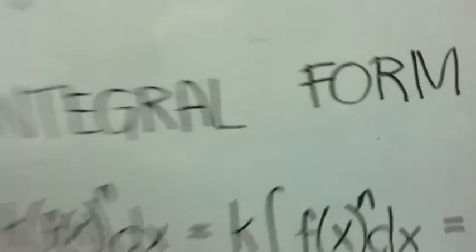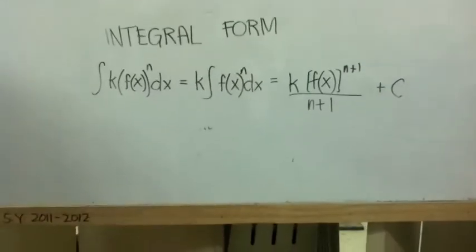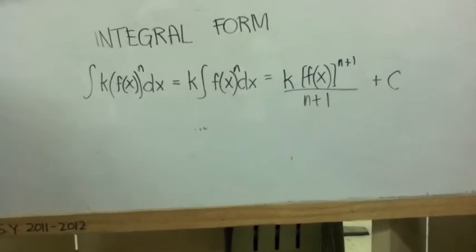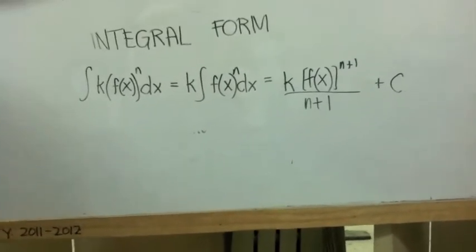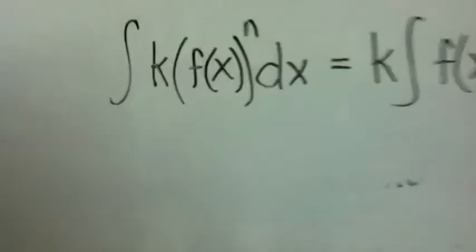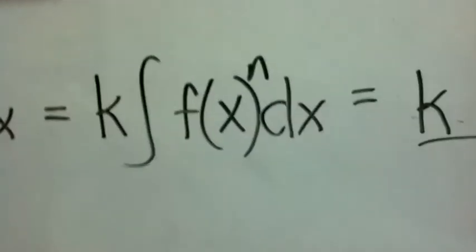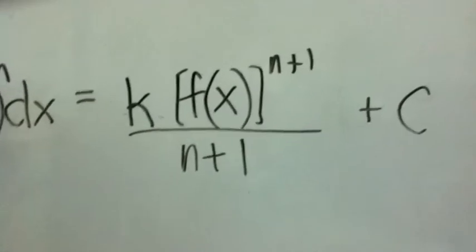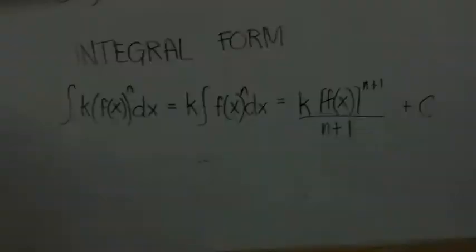In conclusion, during integration of polynomials, we always follow this form. For any function f of x, the integral of k times f(x) raised to n is equal to k times f(x) raised to n plus 1, all over n plus 1, plus C. So let's try more examples.